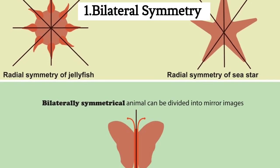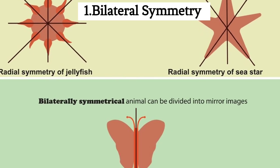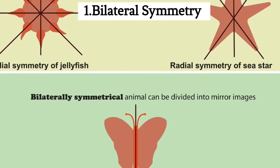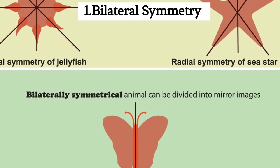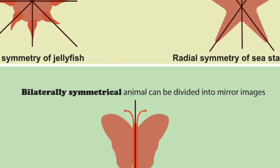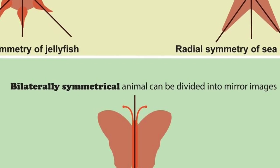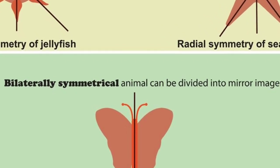1. Bilateral symmetry. Nematodes exhibit bilateral symmetry, meaning they have a distinct right and left side with a single plane of symmetry.